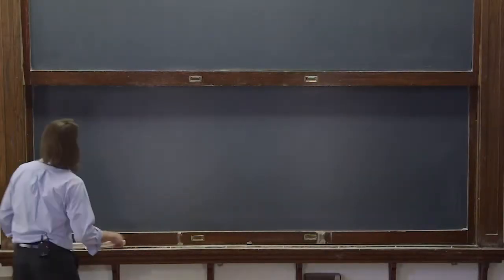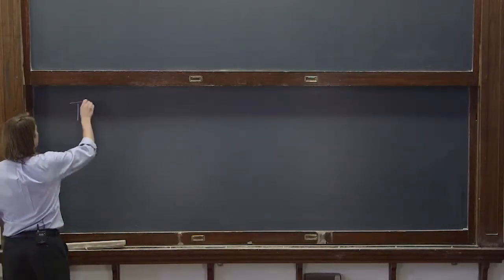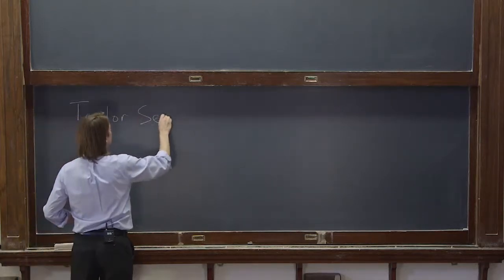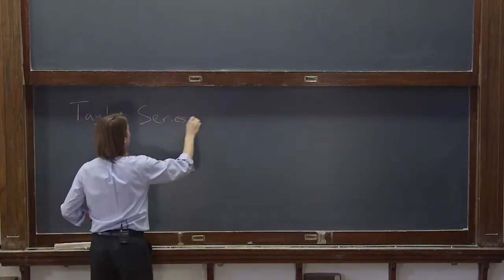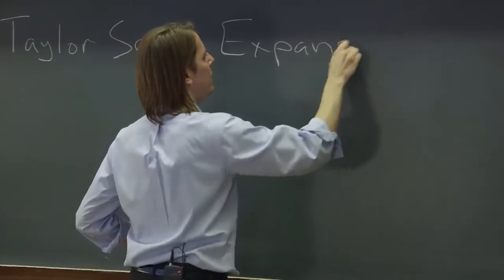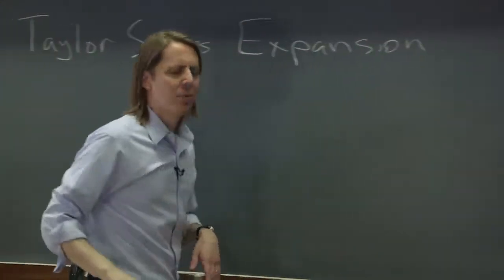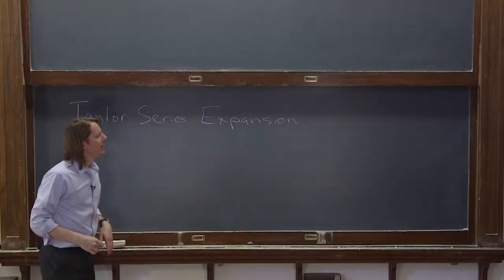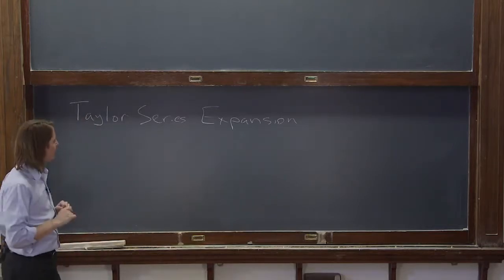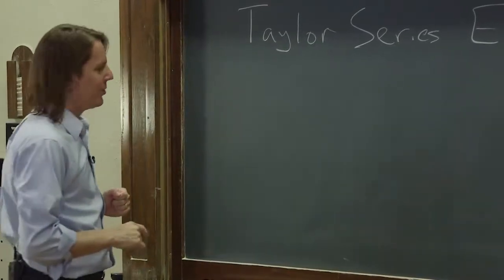Let's see how we're going to make this linear. We're going to do it with a Taylor series expansion. You may recall these from Calculus 1. At the time, if you're like me, you weren't sure why you were learning to do this. But in physics, I can tell you exactly why: we're doing it because it will make something linear.